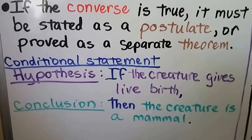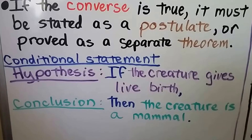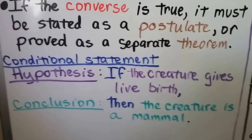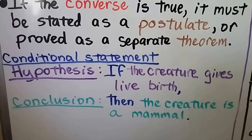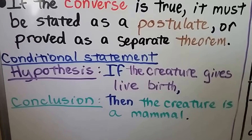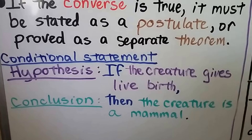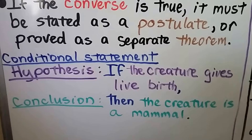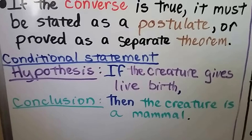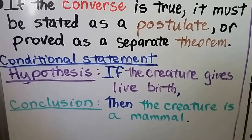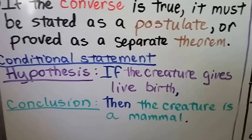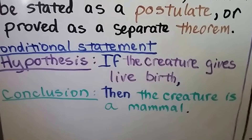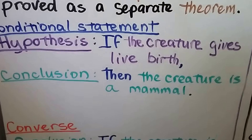We have a hypothesis and a conclusion. The hypothesis is the 'if' and the conclusion is the 'then.' If the creature gives live birth, then the creature is a mammal. That's true — if it has live birth, it's a mammal. That's the definition of a mammal.